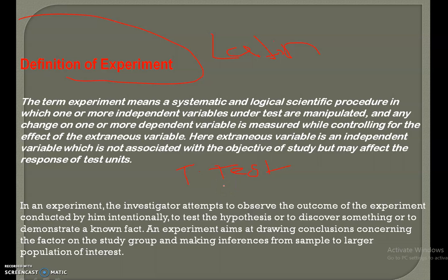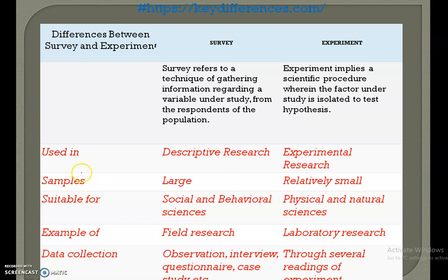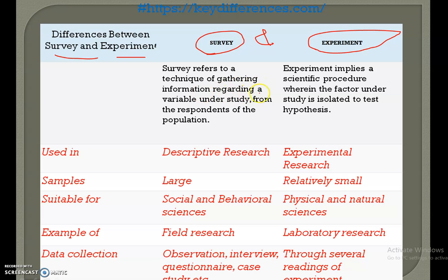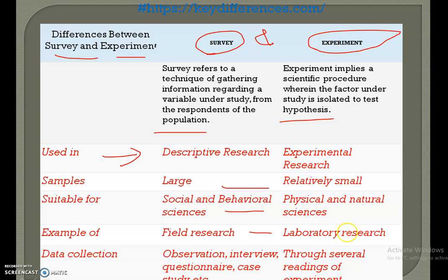I hope you understood about experiment, survey, and field research. Here is the difference between survey and experiment: Survey refers to a technique of gathering information regarding a variable under study from respondents of the population, while experiment implies a scientific procedure where the factor under study is isolated to test a hypothesis. Survey uses a large sample while experiment uses a relatively small sample. Survey is used in social and behavioural science; experiment in physical and natural science. Survey involves field research with observations, interviews, and questionnaires; experiment involves laboratory research.